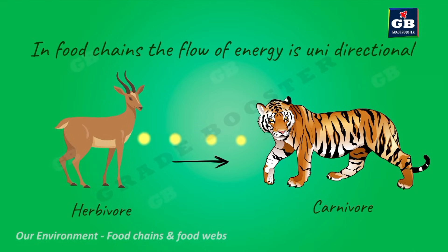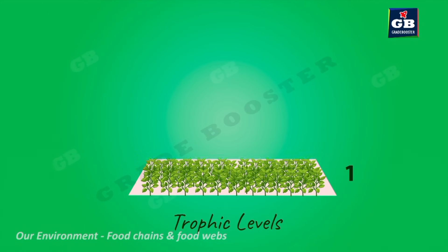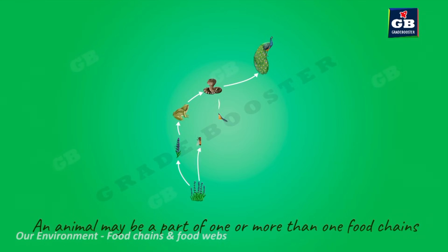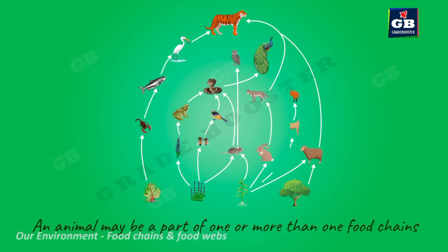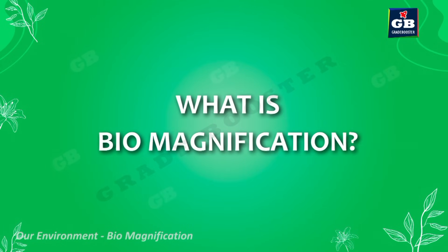In a food chain, the flow of energy is unidirectional — energy flows from a herbivore to a carnivore, never in reverse. Also, the number of organisms in lower trophic levels is very high; as we go up the trophic levels, the number of organisms declines. Sometimes one animal in a food chain may also be part of another food chain, so many food chains may be linked. When all these food chains are presented graphically, it is called a food web.